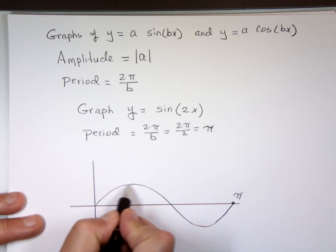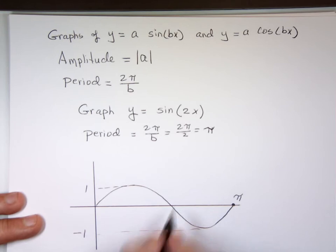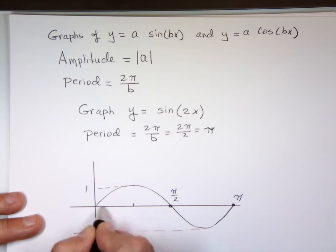How high does it go? 1. Negative 1. That's my amplitude. So this is really pi over 2, half that number. This peak here is half of this, that's pi over 4.